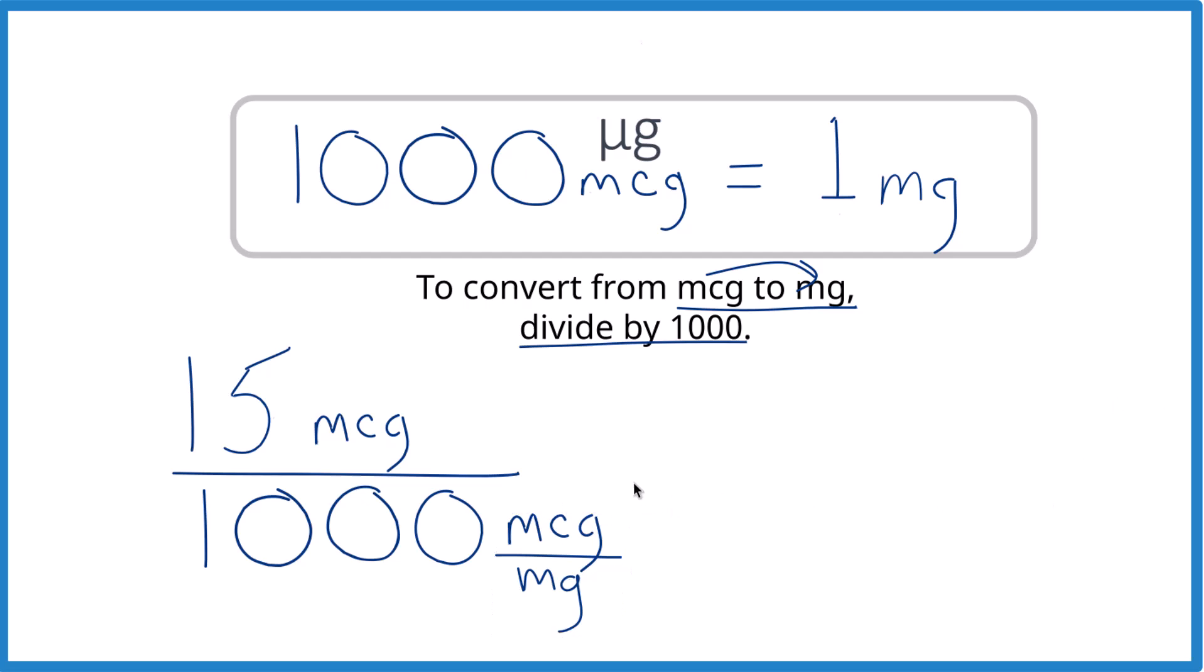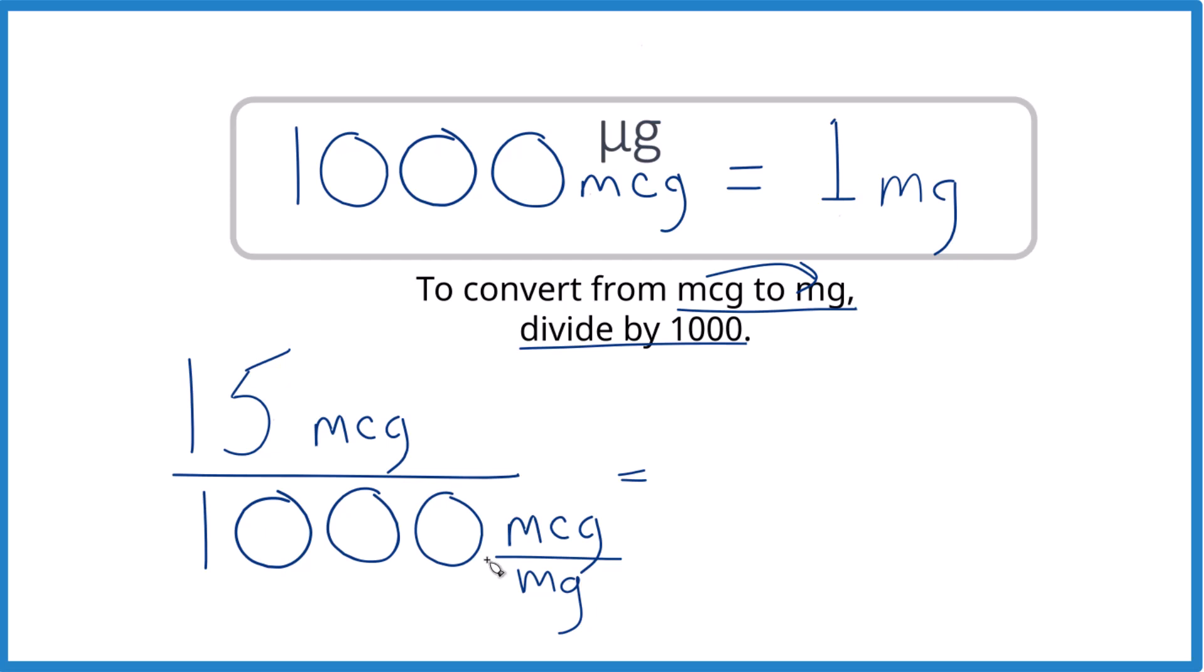So now we can do the math here. We can say, let's do this: 1, 2, 3, put a decimal point. Now we're just dividing by 1. And here, 1, 2, 3, put our decimal point, put a 0 here as our placeholder.